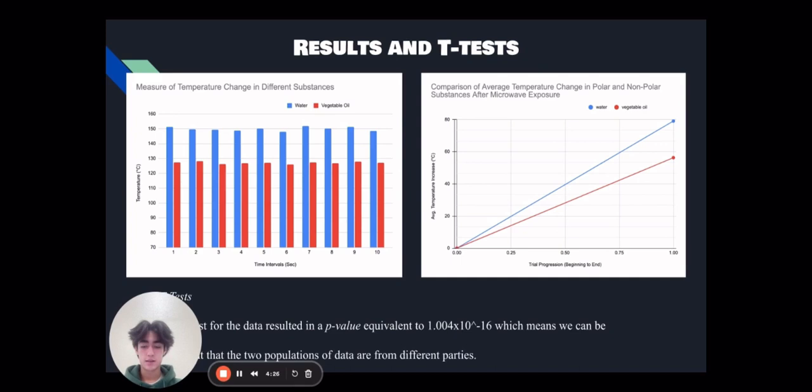Our results and T-tests: Here we can see a data visualization of the difference in slope of temperature increase with the graph on the right, and it shows a higher slope for water when we compare it to oil. The T-tests verified our data sets and confirmed that the two sets of data were from different populations and did not occur by chance.